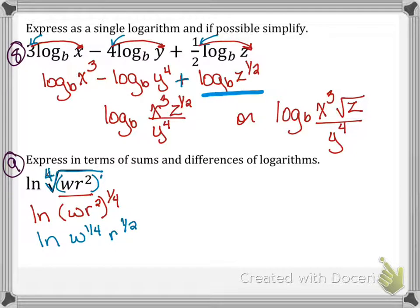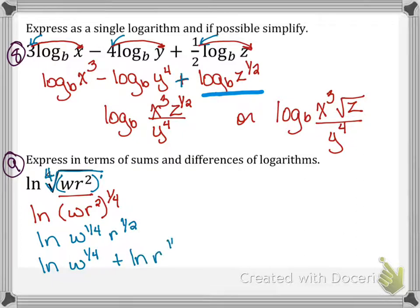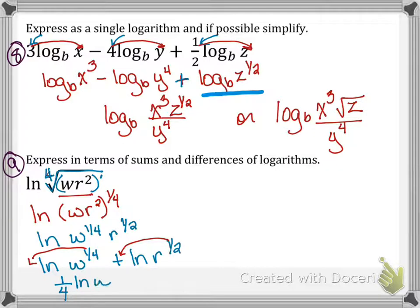Now I can break it up — these are being multiplied, so I get ln(w^(1/4)) plus ln(r^(1/2)). My last step is to move the exponents to the front using the power rule. So the final answer is (1/4)ln(w) + (1/2)ln(r).